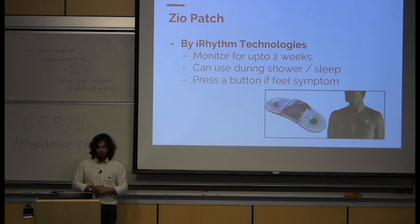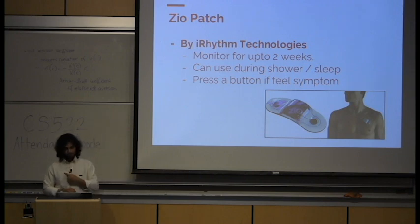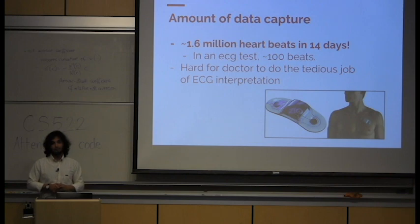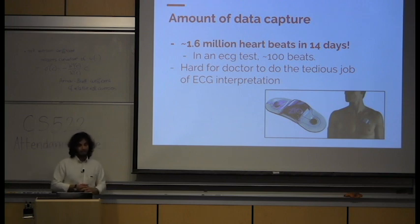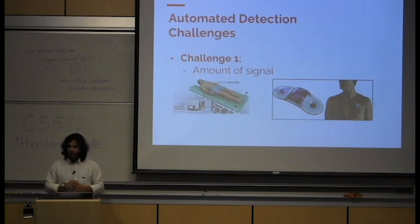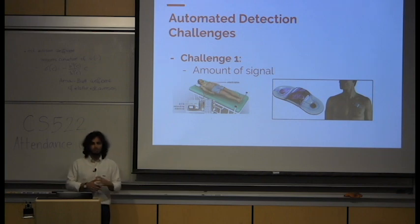If no arrhythmia is found, the patient is given a Holter monitor and told to wear it at home for two days. There are newer devices like the ZioPath, which just goes on the chest and allows monitoring for two weeks — you can shower and sleep with it, and press a button if you feel a symptom. In 14 days, the heart beats 1.6 million times. For a cardiologist to review that would take two weeks — it's impossible. A usual ECG test covers only 100 beats, so the scale difference is enormous. This calls for an automated approach.